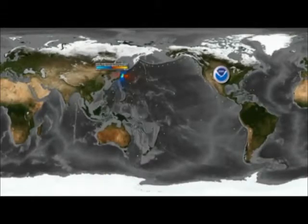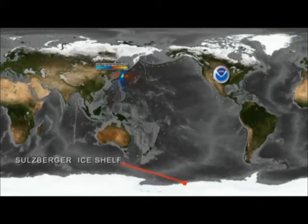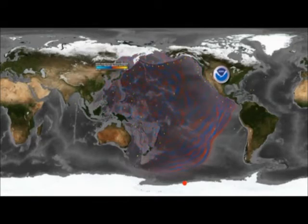The large mass of ice separated from the coast of Antarctica on a part of the continent called the Salzburger Ice Shelf. The Tohoku earthquake and tsunami that struck Japan in March of this year also generated sea swell that propagated throughout the Pacific Basin, as seen in this model.